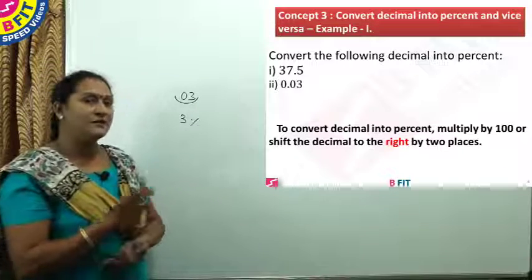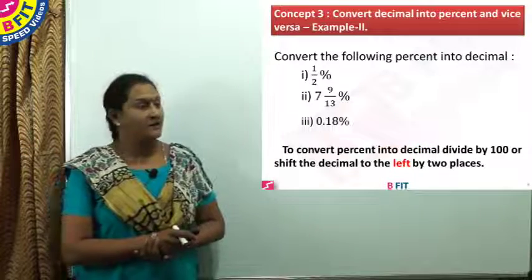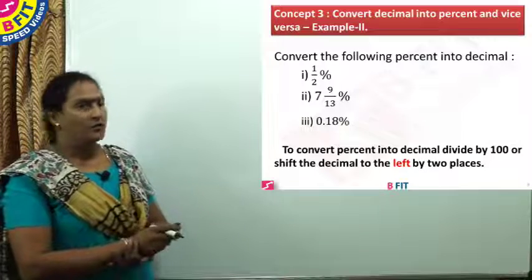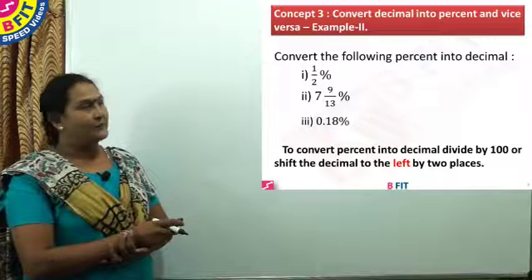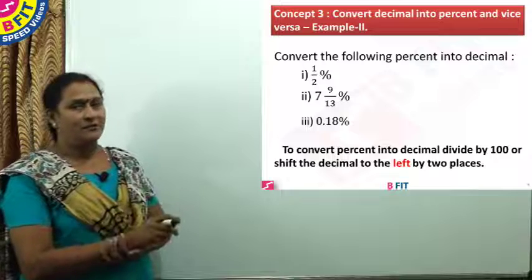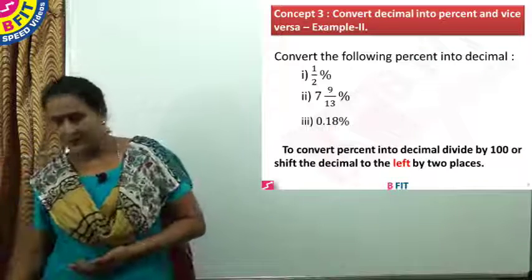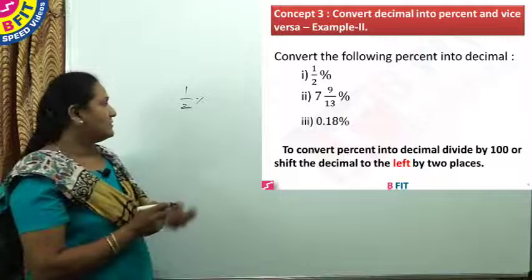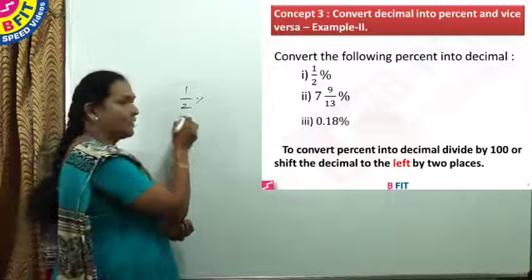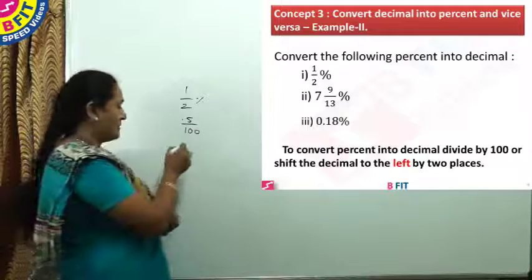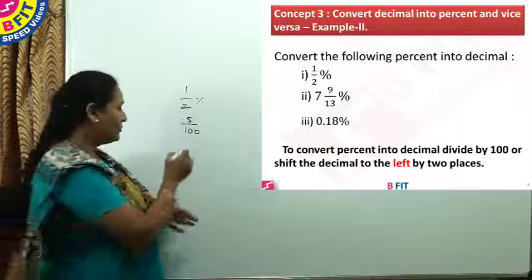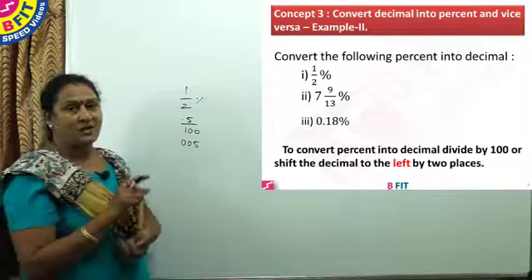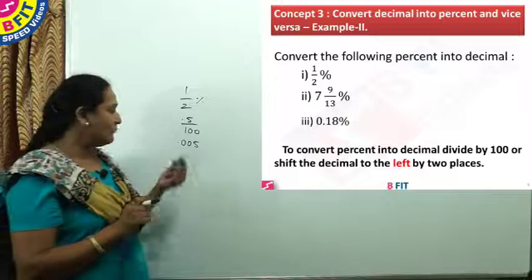Now we will see how to convert percentage to decimals. The next example: convert the following percent into decimals. The numbers are half percent, 7 and 9/13 percent, and 0.18 percent. To convert all these percentages to decimals, divide by 100, or shift the decimal two places to its left. The first number is half percent. Half is equal to 0.5. Divide this by 100, shifting the decimal two places to its left. The answer is 0.005. So for half percent, the value is not 50 — it is 0.005.